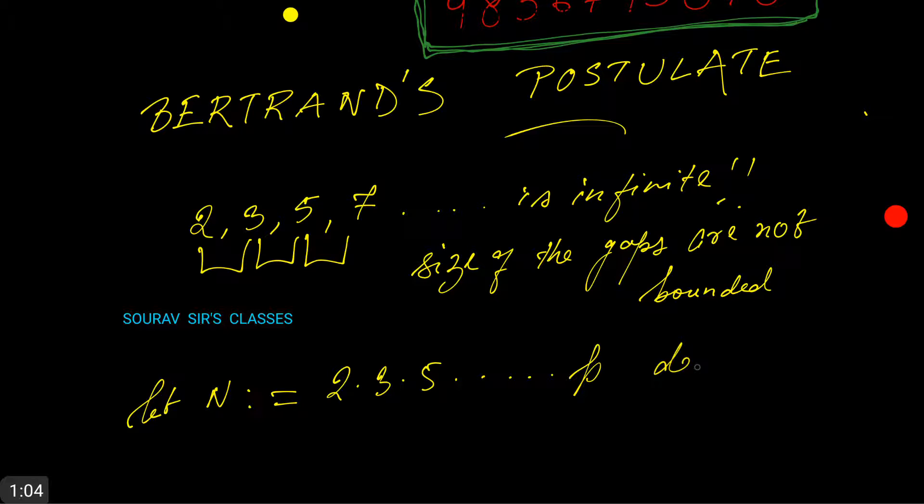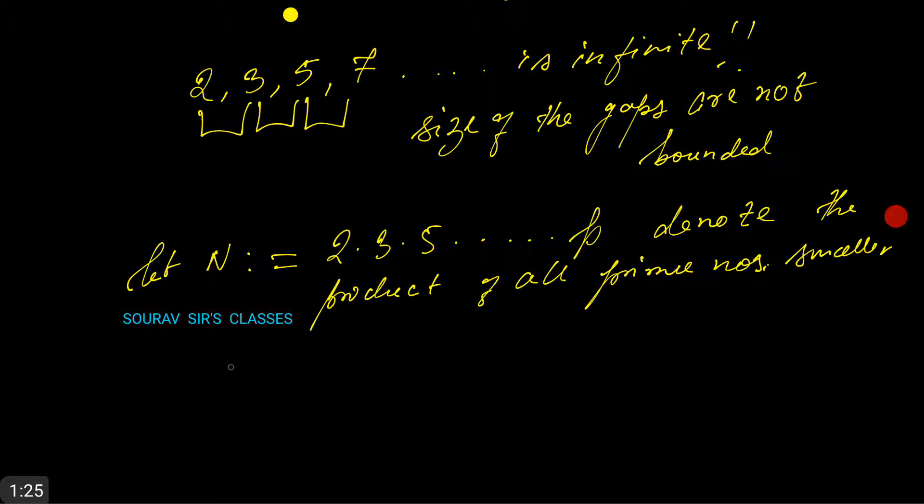Let N denote the product of all prime numbers smaller than k+2.